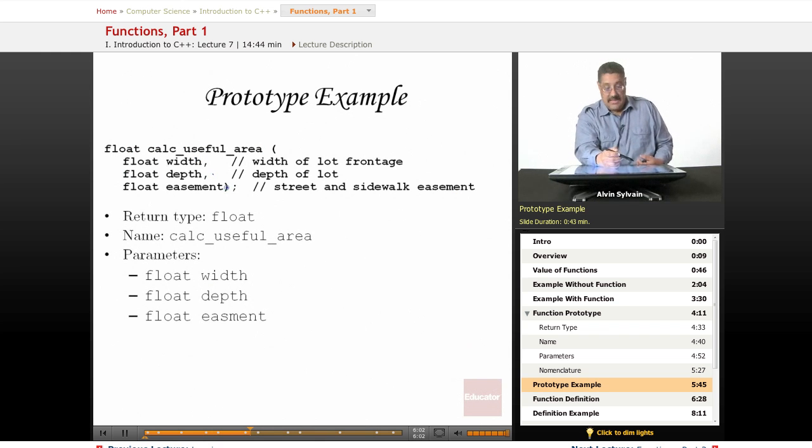And we need the easement passed in, which is also a float. And here we have a good example where each variable has a comment that says, this is what this parameter is for. So, return type is float. The name of the function is calculate useful area. Then we've got our round parentheses, which include each of the three parameters that have to be passed into this function.